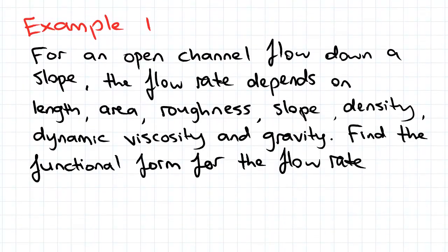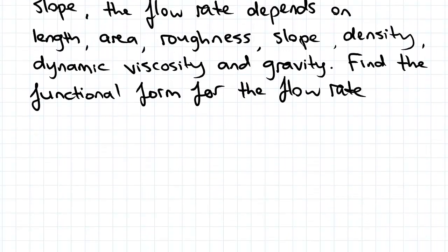For an open channel flow down a slope, the flow rate depends on, here's our variables: length, area, roughness, slope, density, dynamic viscosity, and gravity. Find the functional form for the flow rate.